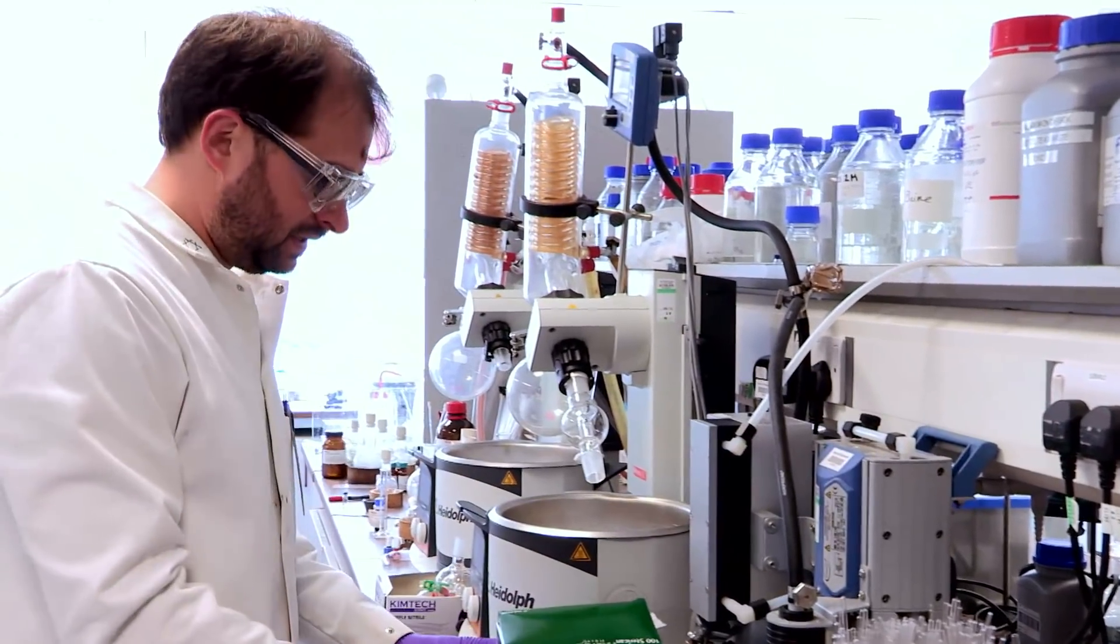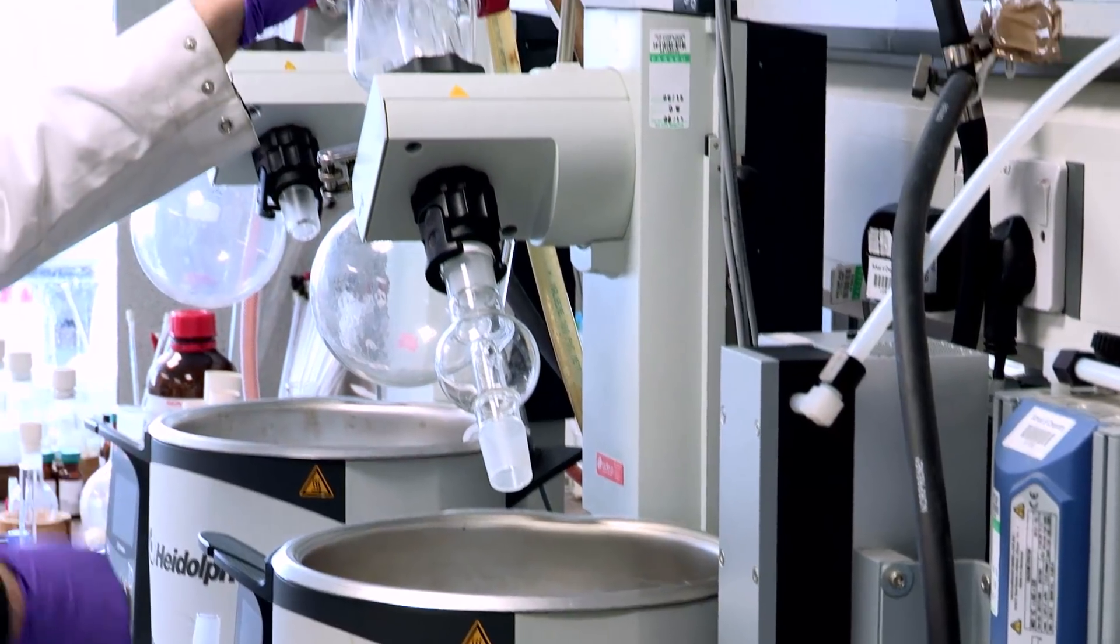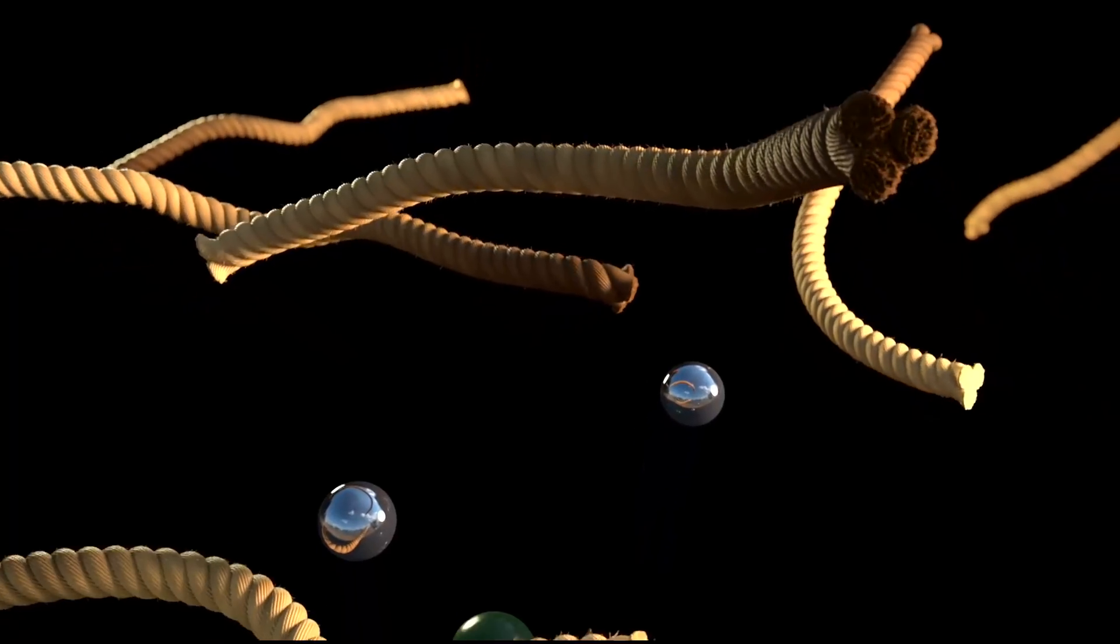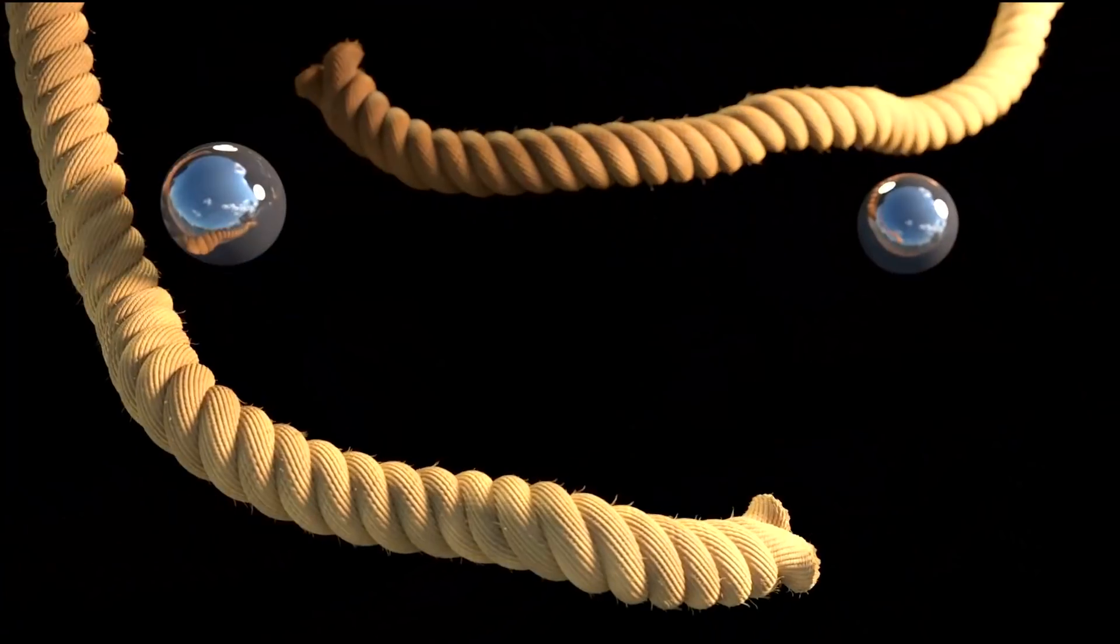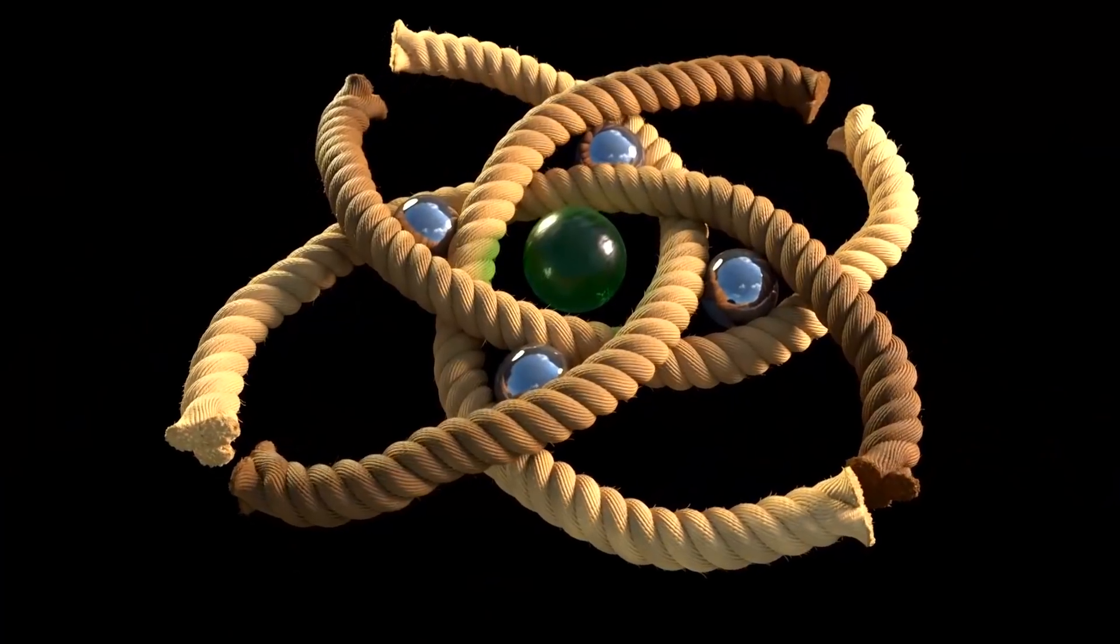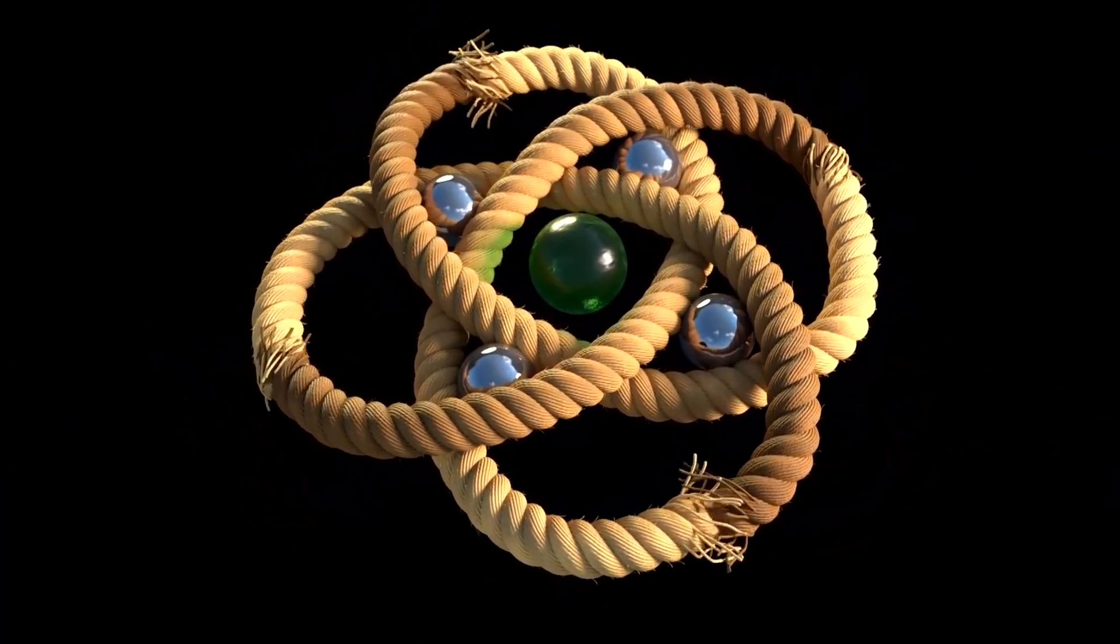Tying molecules into knots is really difficult because the strands are just a few atoms wide so you can't just grab the ends like you would a shoelace and tie them into the knot. We use metal ions to hold the strands in place while we tie the knot around and then the metal ions fall out of the end and voila,